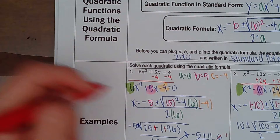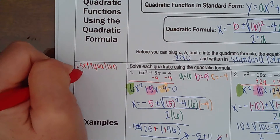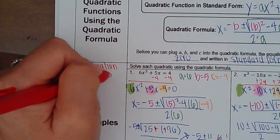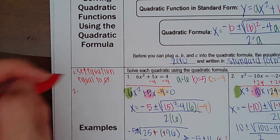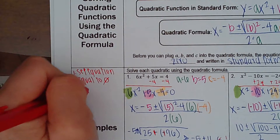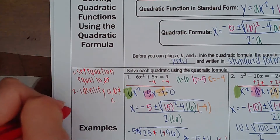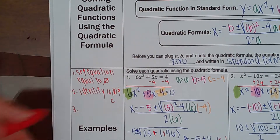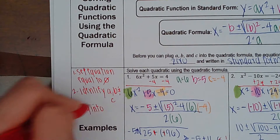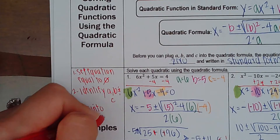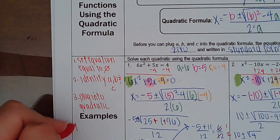I'll go ahead and write the steps here. First thing: set the equation equal to 0. Second thing: identify what your A, B, and C are. Third thing: plug it into the quadratic formula and simplify.